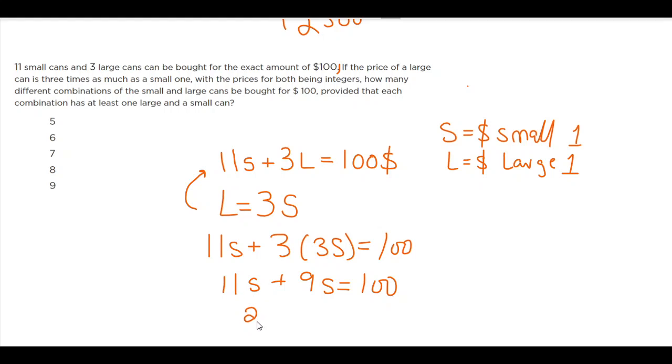So 11s plus 3 times 3s, which is 9s, equals 100. So 11 plus 9 is 20s equal to 100. If I come back over here, s is going to be 100 divided by 20.